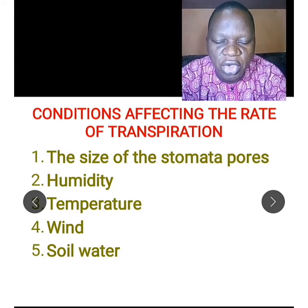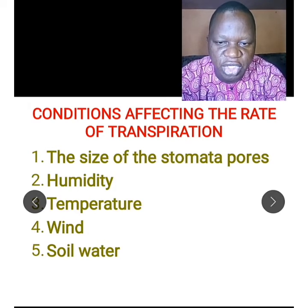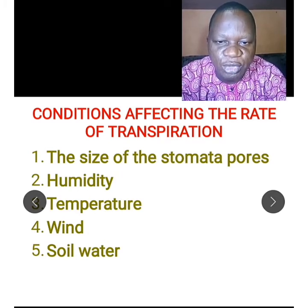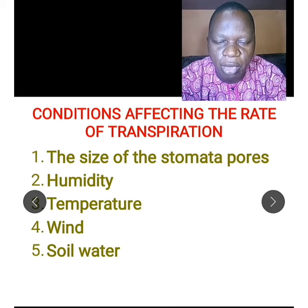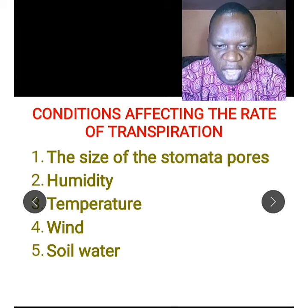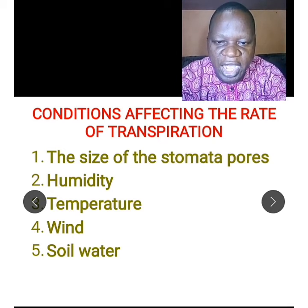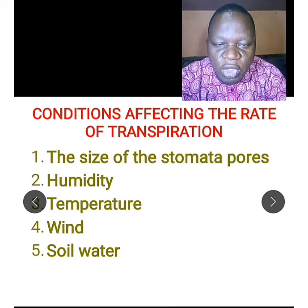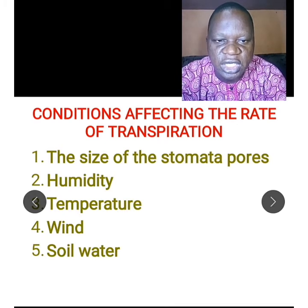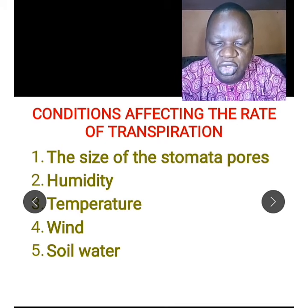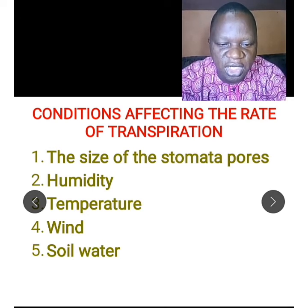The second condition is humidity — the presence of moisture in the atmosphere. When there is high moisture in the atmosphere, transpiration will be very low. When there is less moisture in the atmosphere, there will be a higher rate of transpiration. Third is temperature — when temperature is very high, the rate of transpiration is also high. Wind also increases the rate of transpiration. And soil water — when there is much water in the soil, that will also increase the rate of transpiration.